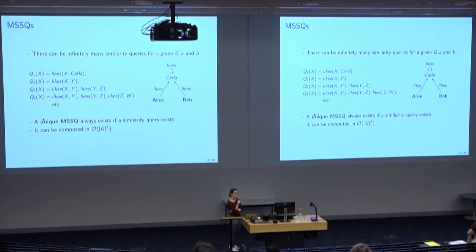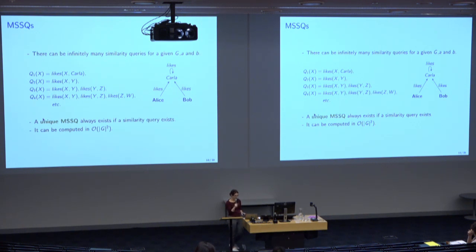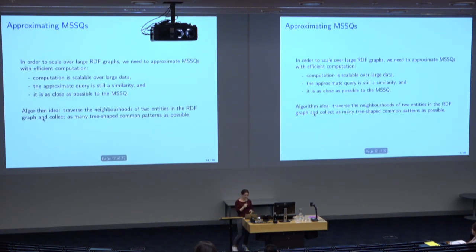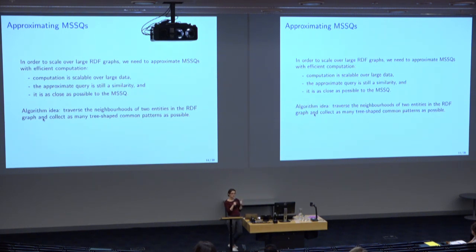The bad news is that computing the MSSQ requires time quadratic in the size of the input graph, so such computation is not feasible over large knowledge graphs like DBpedia or Yago. Instead, we try to approximate this computation. We need an algorithm that takes two entities in a graph and computes a query which is a similarity and closely resembles the full MSSQ, while remaining scalable over large datasets.